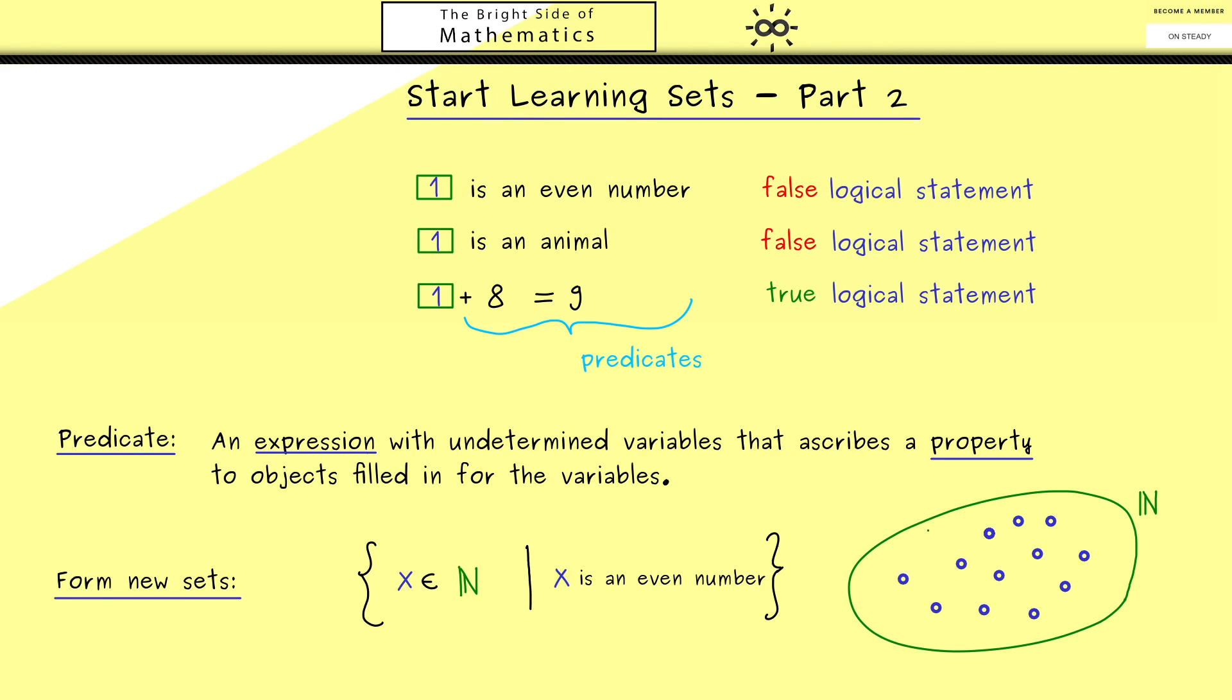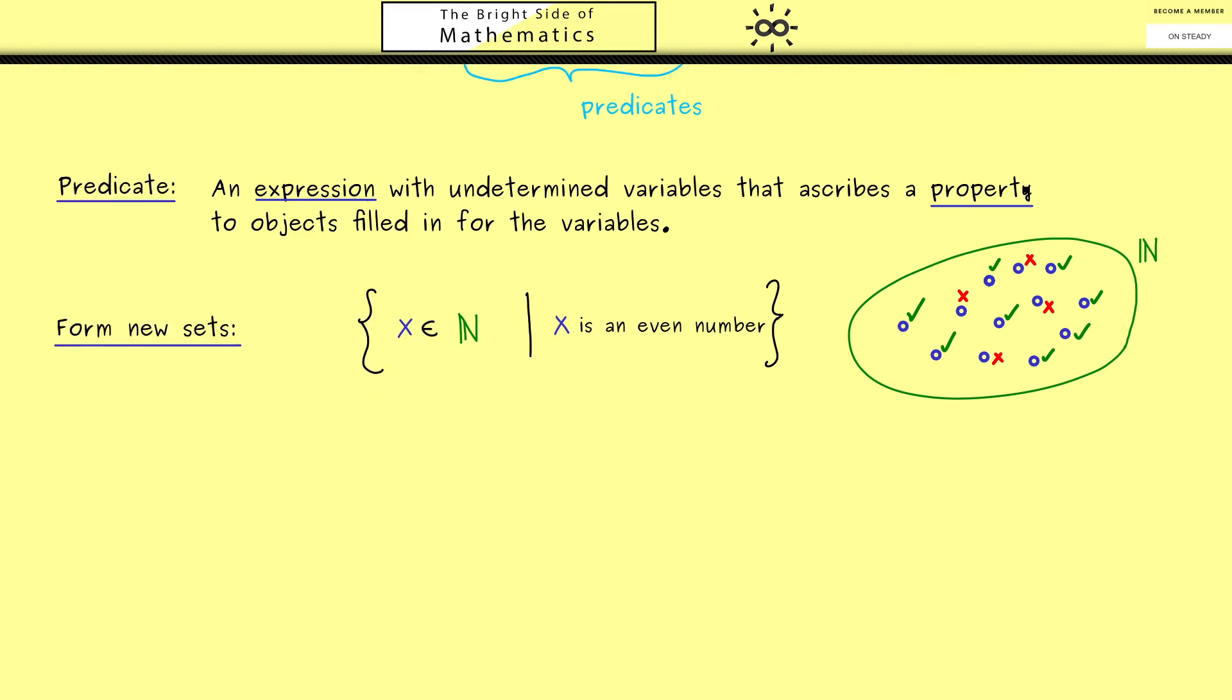The visualization should be like this: you have the old set, which in our example is N, then you put the elements into the predicate and check the truth value. We get out a new collection - all the elements we checked green form the new set. This construction we can always do in set theory.